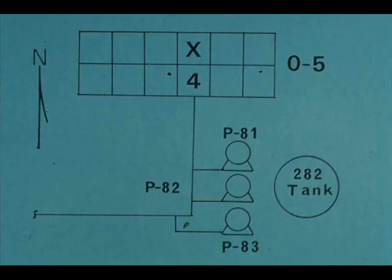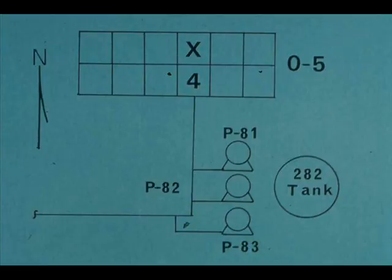Feeders from substations provide power for equipment. From O5 substation, for example, feeder X-4 provides power for pumps numbers 81, 82, and 83 west of tank number 282. In one refinery, X means that the feeder carries 2,400 volts; Y indicates 480 volts.